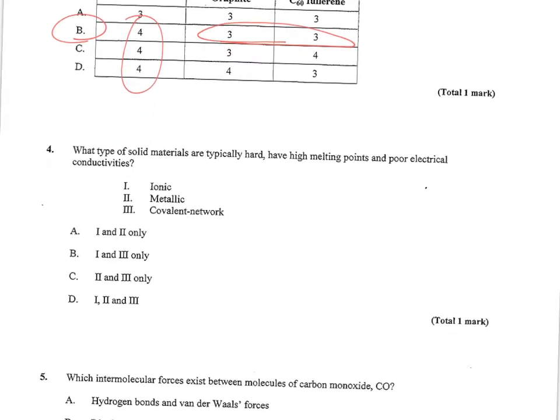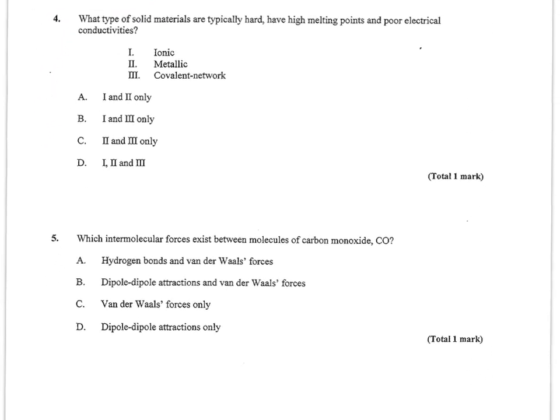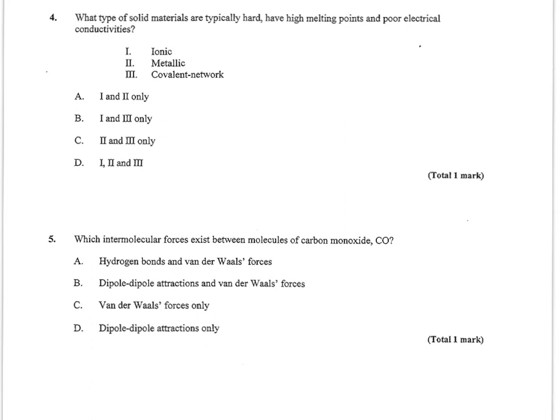Number four asks what type of solid materials are typically hard, have high melting points, and poor electrical conductivities. This is going to be both ionic and covalent network. Metallic is typically hard with a high melting point, but they have good electrical conductivities. So just one and three have poor conductivities as solids, along with the high melting point and rigidity.